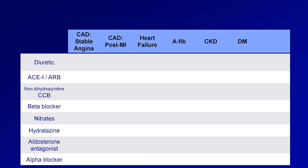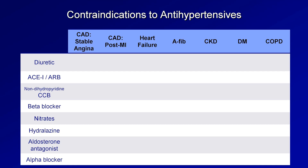In addition to compelling secondary indications, there are also compelling contraindications to specific antihypertensive classes. Thiazide diuretics are relatively contraindicated in diabetes, since they can contribute to insulin resistance, though the effect is probably quite small. Non-dihydropyridines are contraindicated in heart failure, as they have negative inotropic properties. Some beta blockers are believed to worsen insulin resistance, though this is not believed to be an effect seen with carvedilol. Beta blockers are also relatively contraindicated in COPD. Hydralazine is associated with reflex tachycardia, and is generally considered contraindicated in patients with angina. Aldosterone antagonists can lead to hyperkalemia and are to be avoided in chronic kidney disease. Some studies show worse outcomes when alpha blockers are used in patients with heart failure.